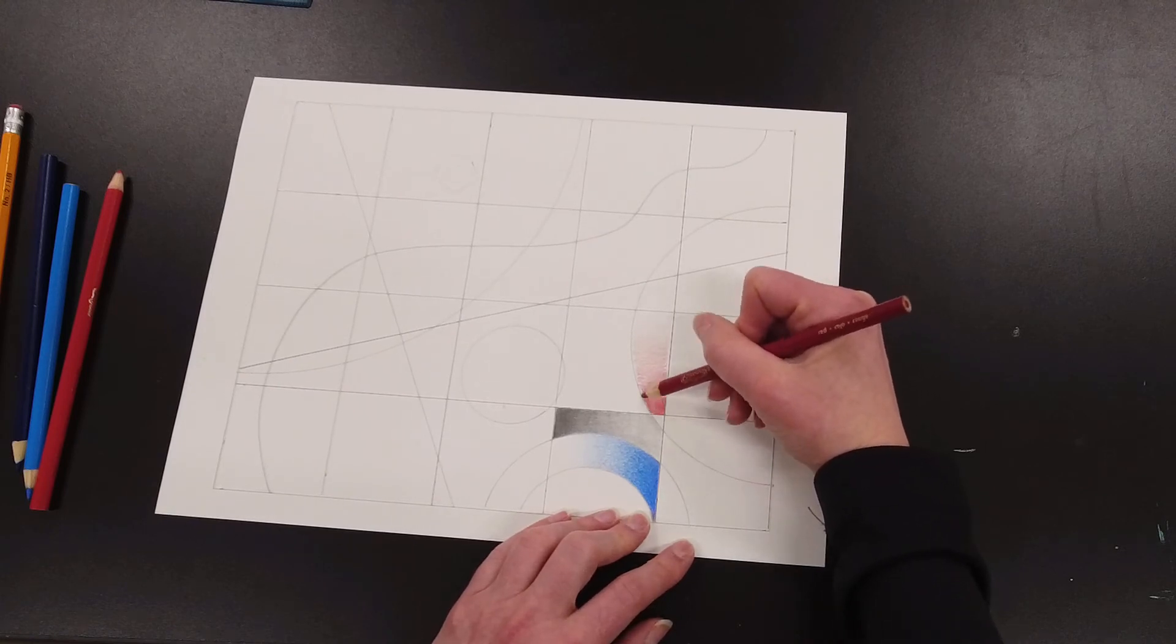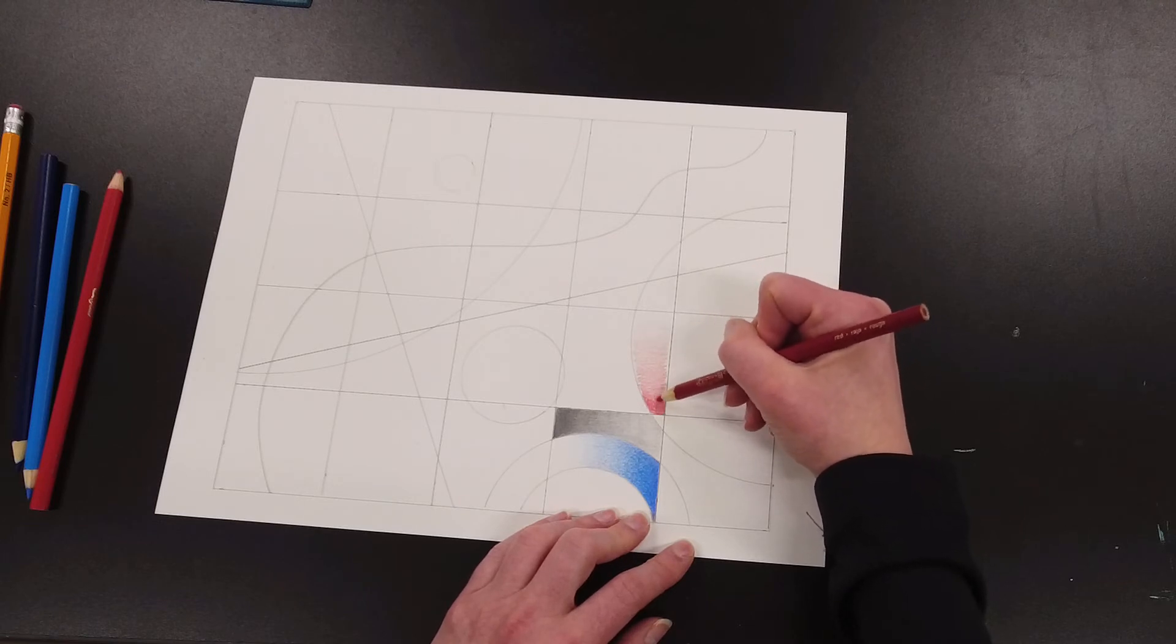Then I'm going to turn my page and go back in the opposite direction to clean up my edges and to go ahead and start building up that value in the darker spaces.